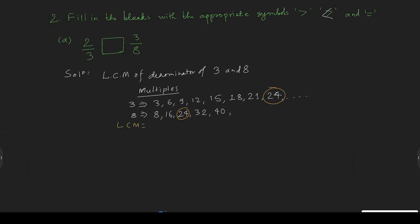So the LCM is equal to 24. This means LCM 24 is the common denominator - the common denominator is equal to 24.